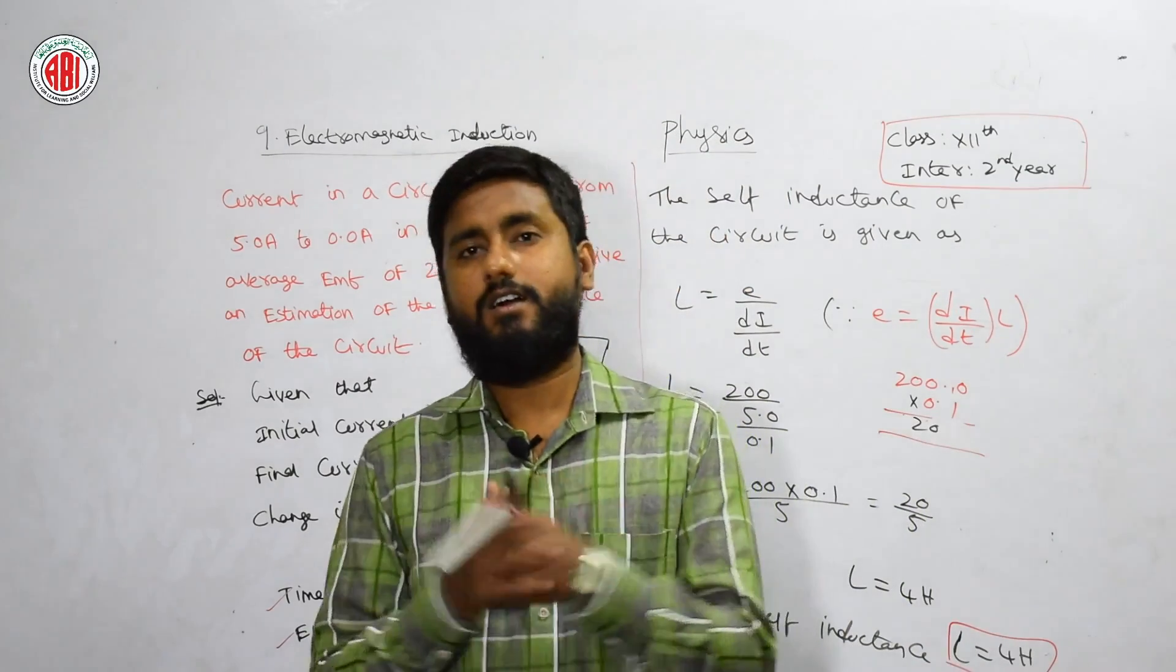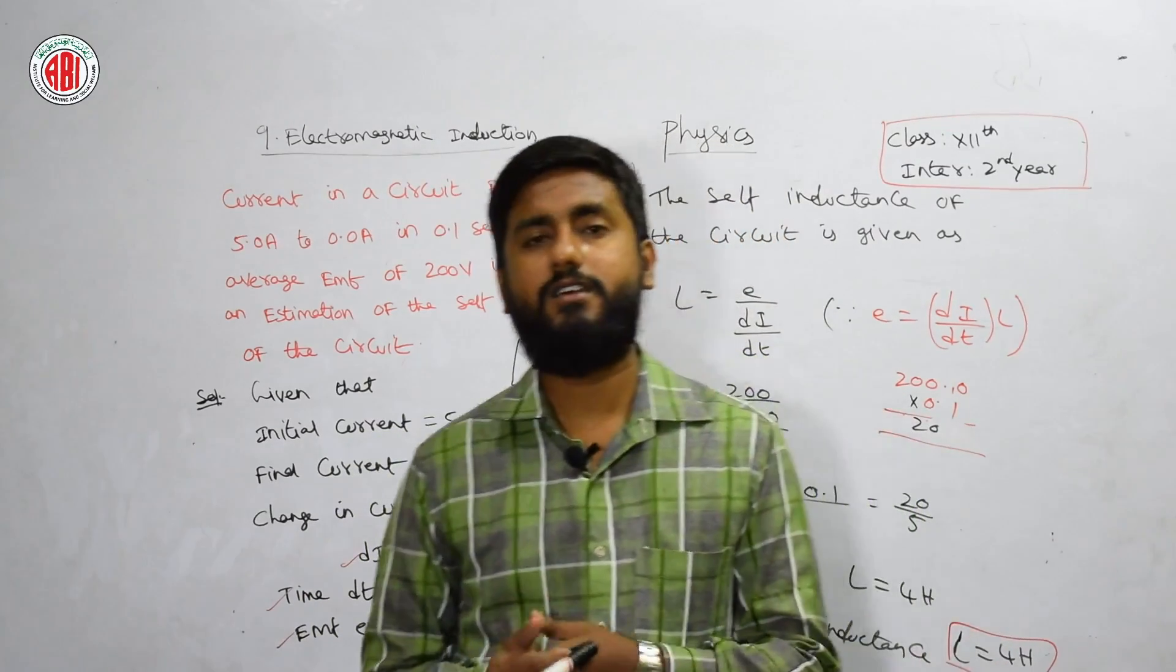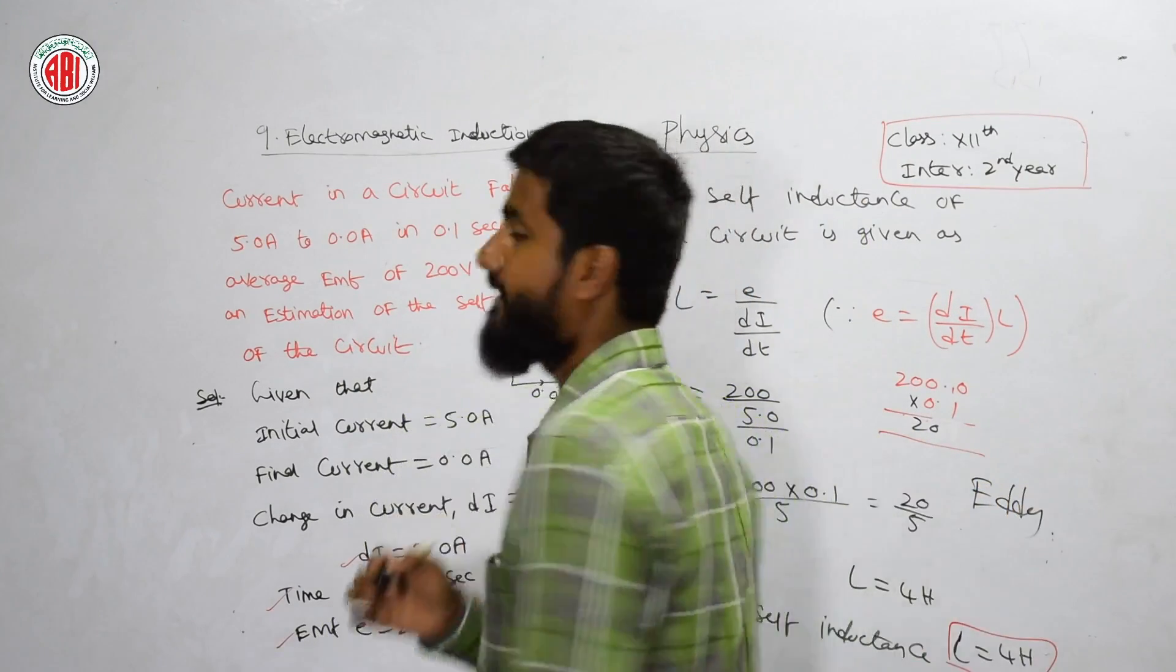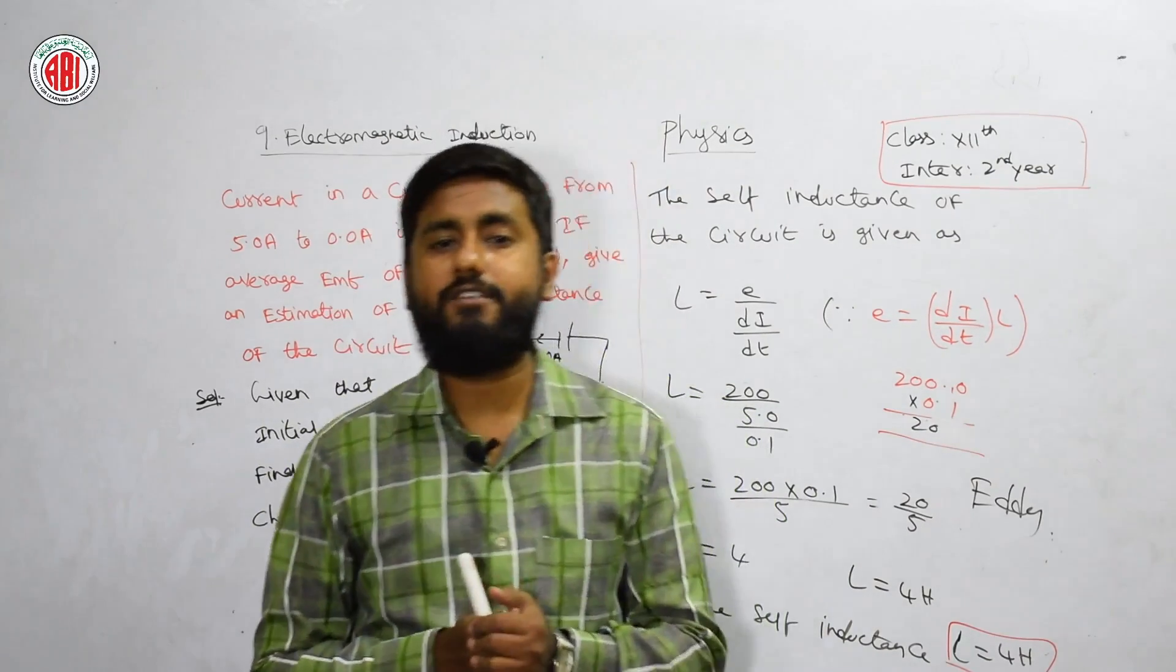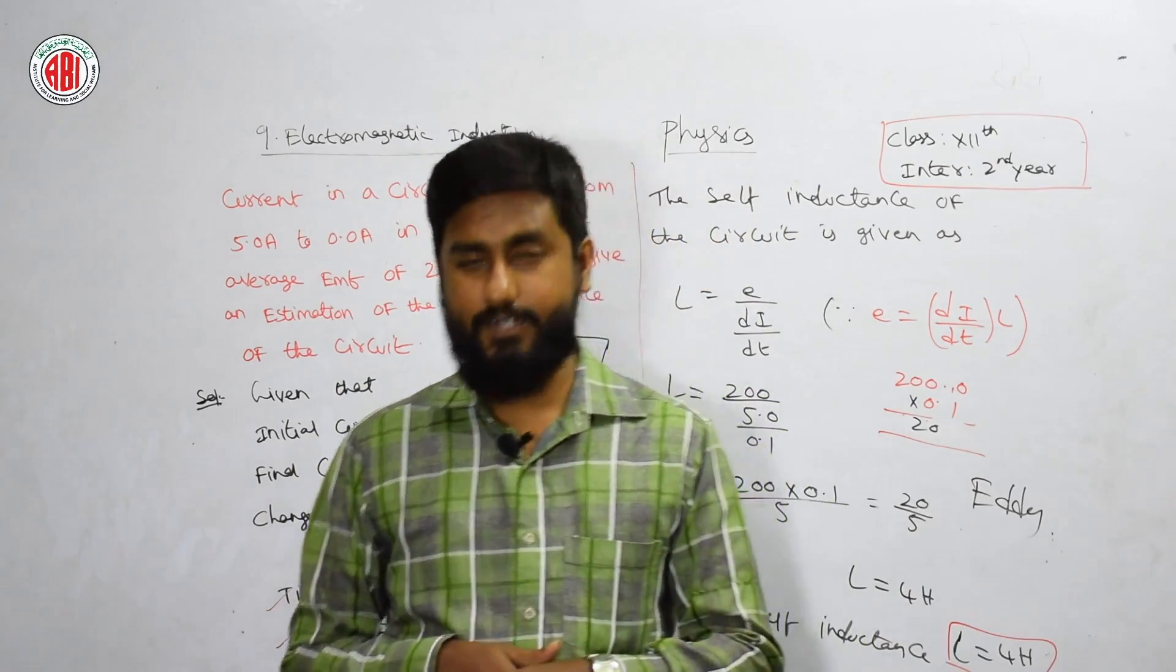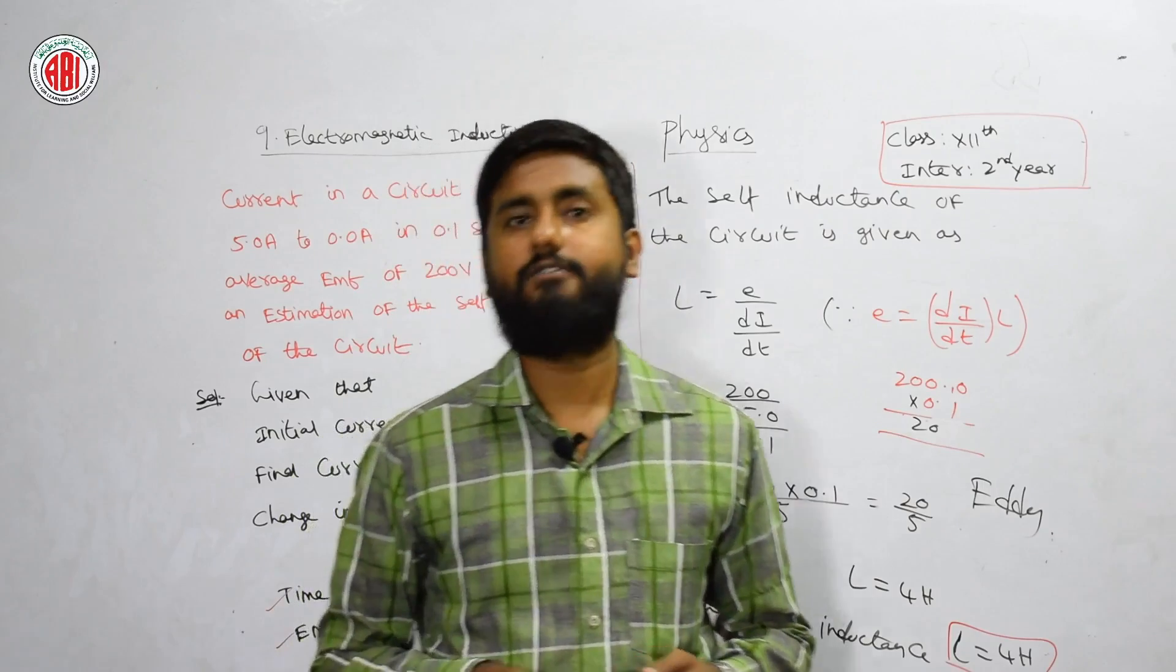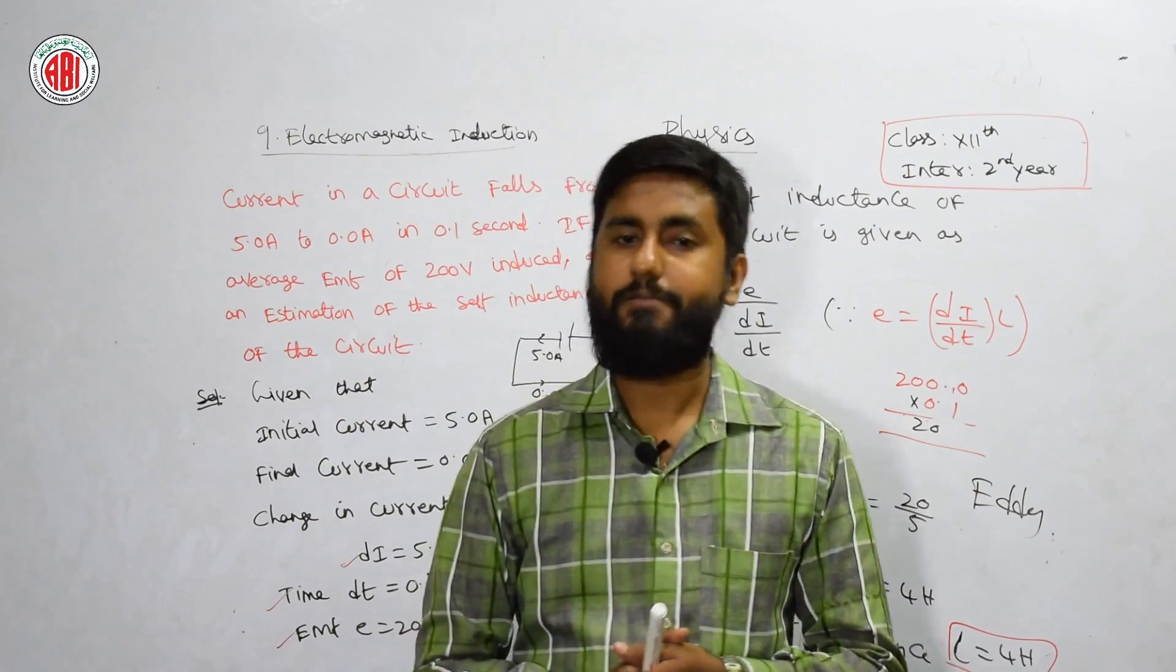You need to just write and remember. The question is: describe the ways about the Eddy's current. Eddy is one of the scientist's name. Here we have four different ways to use Eddy's current. One is magnetic braking in the train. Another is electromagnetic damping. Third is induction furnaces. Fourth is electric power meter.